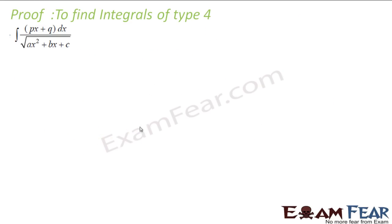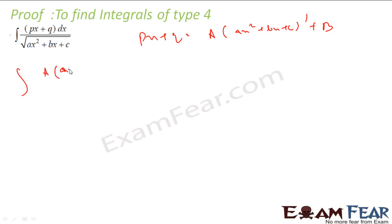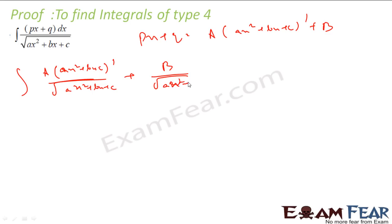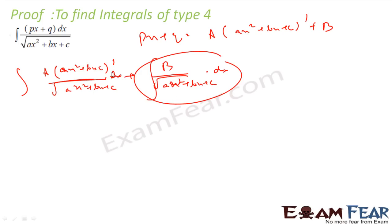Similarly, for (px+q) divided by root(ax²+bx+c), we do exactly the same thing. We write px+q as A times the derivative of (ax²+bx+c) plus B. This gives A times (derivative of ax²+bx+c) divided by root(ax²+bx+c) plus B divided by root(ax²+bx+c). Setting t = ax²+bx+c, the first part becomes A times dt divided by root(t), which is easy to integrate.